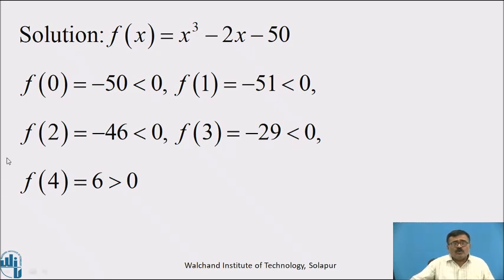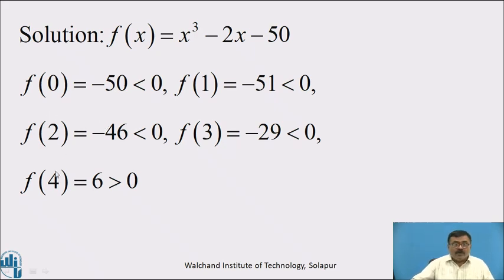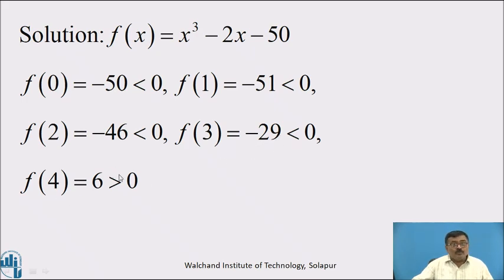To find the interval, put x = 0, 1, 2, 3, and so on. Where the sign of f(x) changes either from positive to negative or from negative to positive, the corresponding value of x is taken as the interval. f(0) = −5 (negative), f(1) = −51 (negative), f(2) = −46 (negative), f(3) = −29 (negative), and f(4) = 6, which is positive.